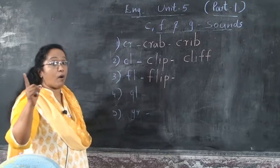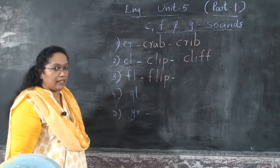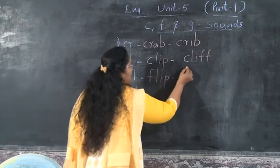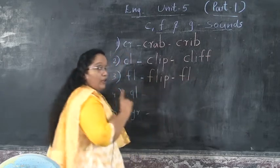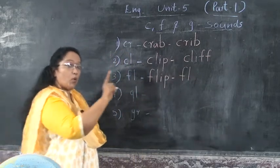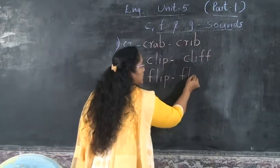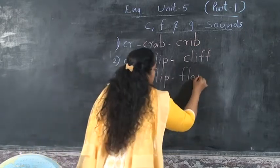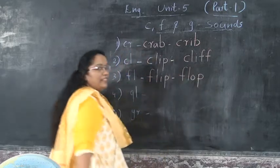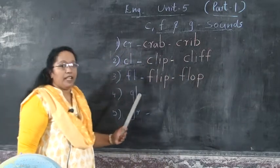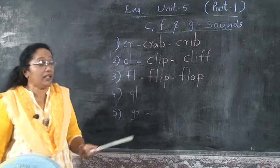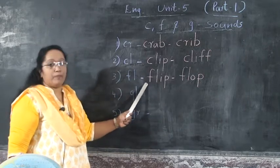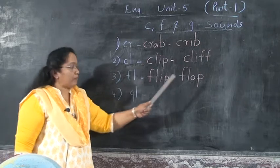Next word is flop. Flop. Tell me which is the starting letter. F-L. Flop. Flop. F-L-O-P. Very good. You are good children. Tell me two words starting with FL. Flip and flop. F-L-I-P. Flip. F-L-O-P. Flop.